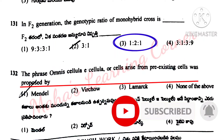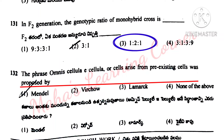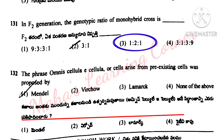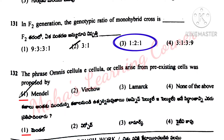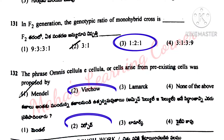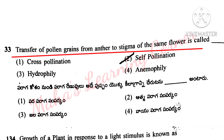The phrase 'Omnis cellula e cellula' or 'cells arise from pre-existing cells' was proposed by? Options: Mandal, Virchow, Lamarck, none of the above. Correct option is option 2: Virchow.